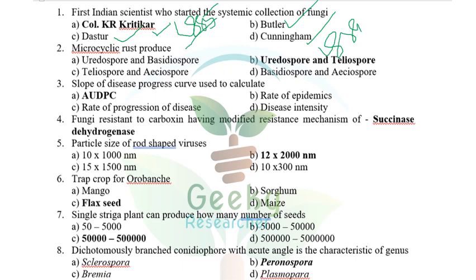The next question concerns algae — Cephaleuros species — and micro-cyclic rust. Macro-cyclic rust has all five stages: stage 0 (pycnial/spermatial), stage 1 (aecium), stage 2 (uredium), stage 3 (telium), stage 4 (basidium). Micro-cyclic rust has absence of one or more stages; it generally contains uredospores and teliospores. The answer for micro-cyclic rust spores is uredospores and teliospores.